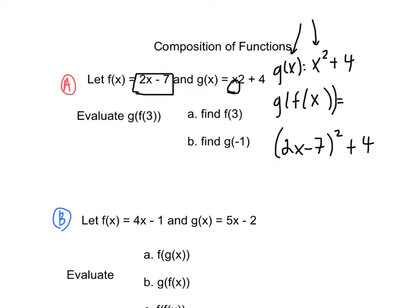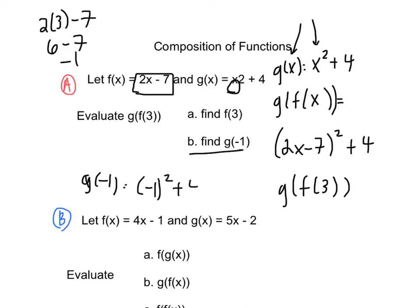But instead, we have g of f of 3. So first, we're going to find simply what f of 3 is. So we're going to plug in 3. 6 minus 7, negative 1. And we're going to find g of negative 1. So we get 5, 1 plus 4.